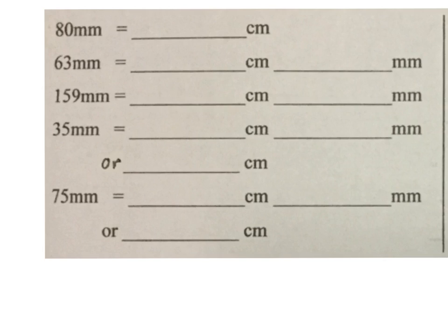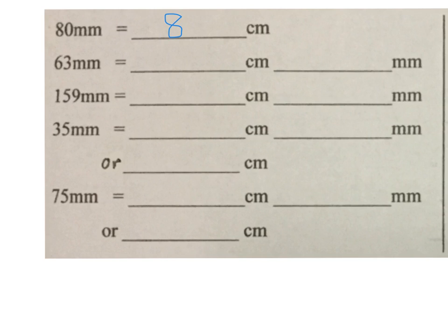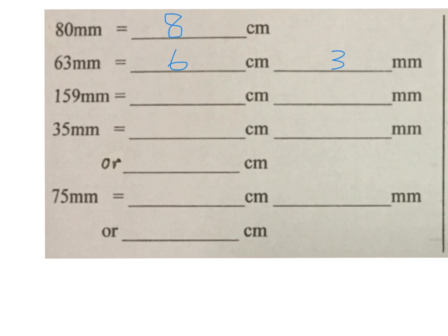Now we're going to do millimeters to centimeters. Ask: who's the small one, who's the big one? The centimeter is big, the millimeter is small. Do I have enough small ones to make a big one? Yes — I need 10 millimeters to make a centimeter. So 80 millimeters: how many tens are in 80? That's 8, giving me 8 centimeters. For 63 millimeters: do I have enough? Yes — I can make 6 centimeters (that's 60 millimeters), and 3 millimeters are left over — too small to make another centimeter.